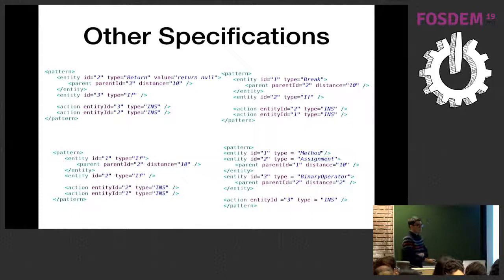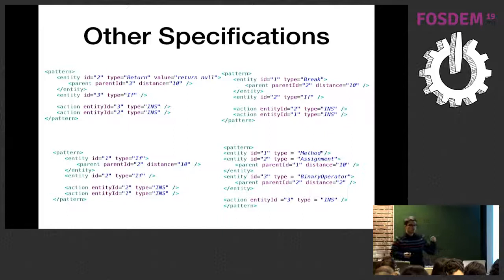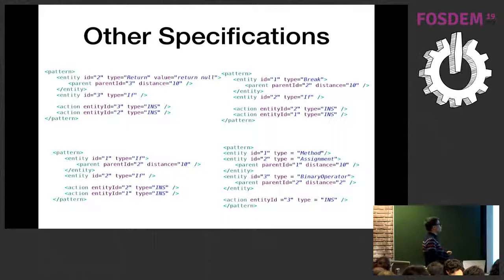Here are some examples of other specifications. We can use the value property to match a node whose value is, for instance, 'return null,' or match the value of a variable or method invocation. We can also have more complex patterns with more than two entities, matching three entities that change.